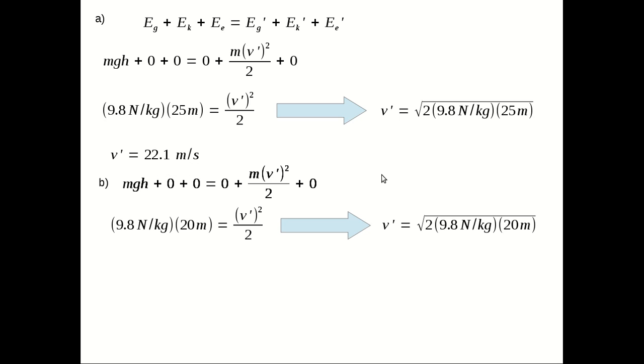In part B, it's a similar solution, except that at location B, at point B, compared to the start position for the cars, the cars are 20 meters lower. So here I've measured the height at the beginning. So this is the height at the start, but it's now relative to point B.